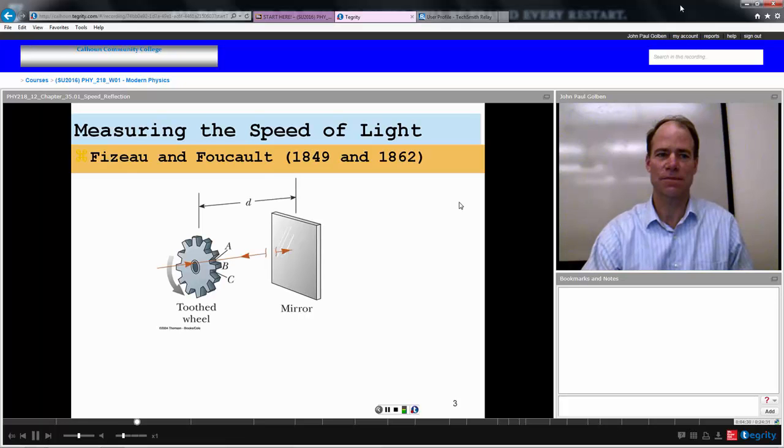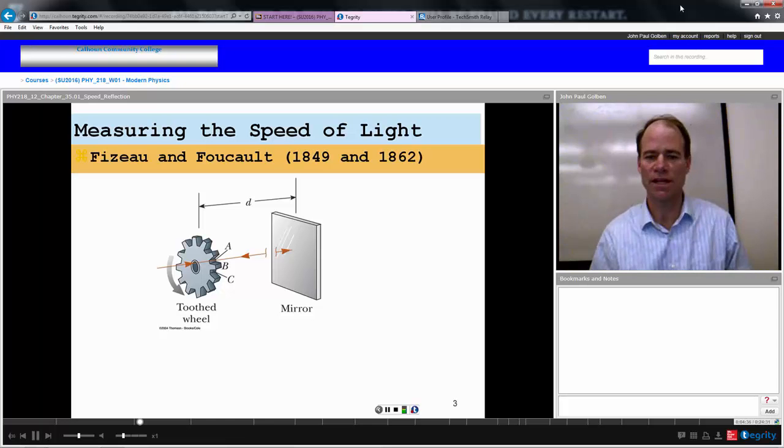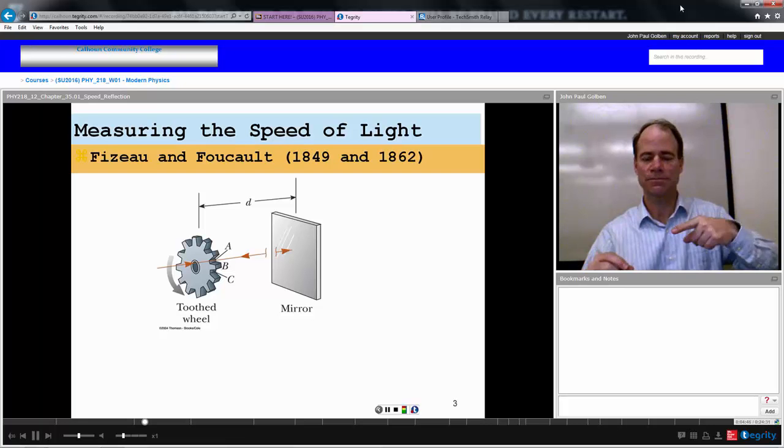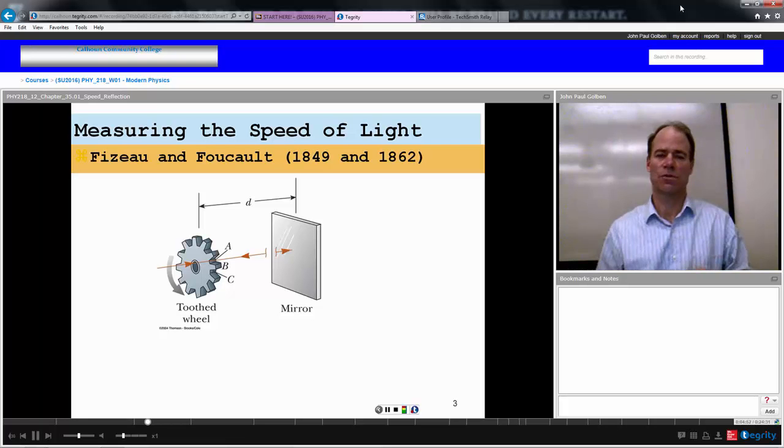Here's a more accurate setup by Fizeau and Foucault. They did it several times and several variations of this same basic idea. But here you have a tooth wheel, which you can vary the speed of this wheel. You have light going through the gap of the wheel, and it's reflecting off a mirror at some distance D, and it comes back towards your eye.